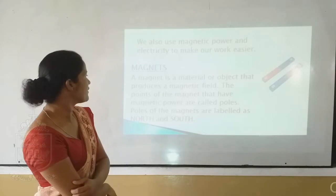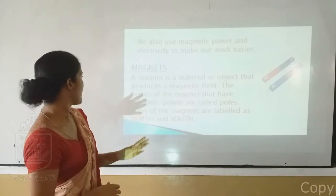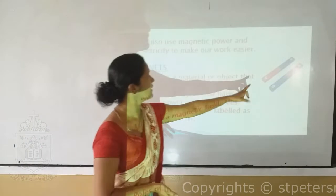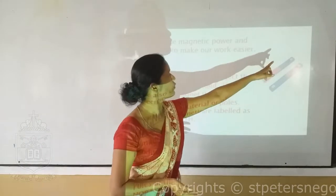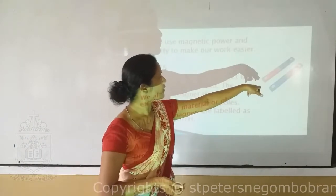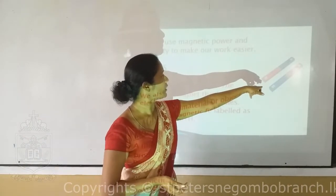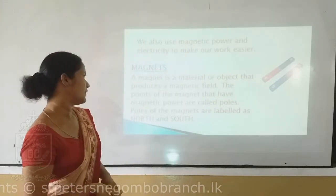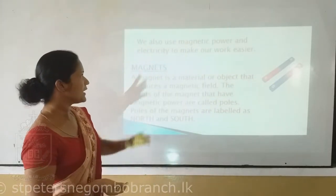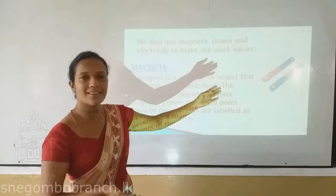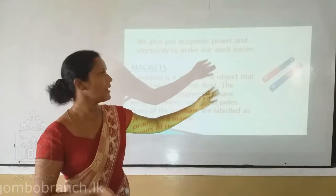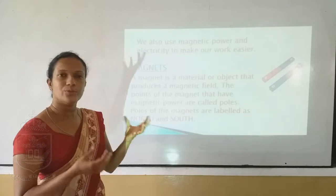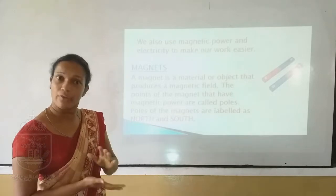The points of magnets that have magnetic power are called poles. You can see here there are two poles — the north pole and the south pole. Using these north pole and south pole, people do their work.